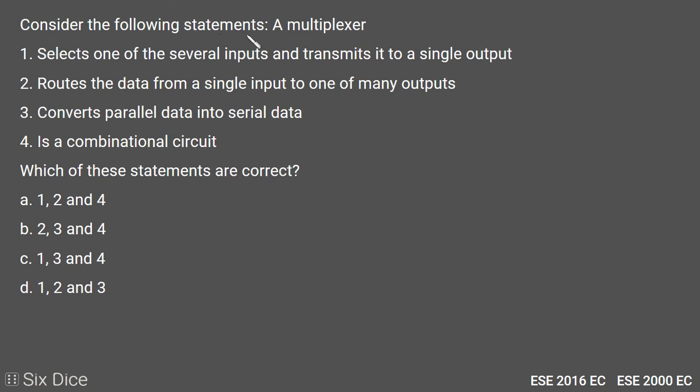The question is: consider the following statements. A multiplexer: Statement 1 - selects one of the several inputs and transmits it to a single output. Statement 2 - routes the data from a single input to one of many outputs.